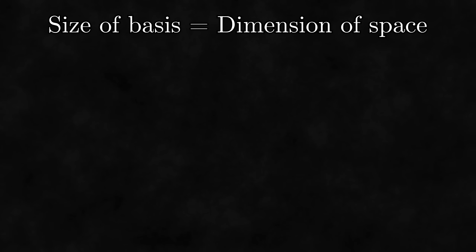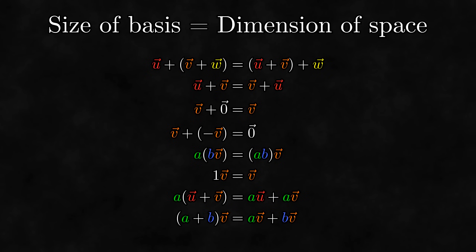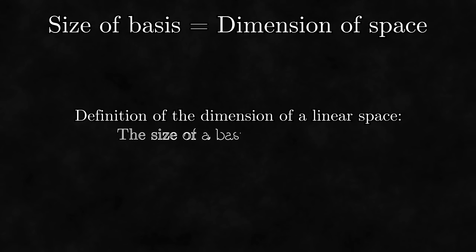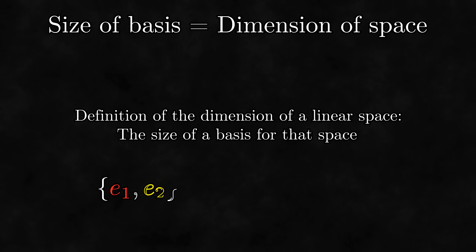But wait, what actually is the dimension of a space? While it might feel obvious when working with arrows, we've seen previously that mathematicians like to define vectors as abstract objects satisfying a bunch of conditions. So what is the dimension of a linear space that's more abstract? Well, since in the linear space of arrows the dimension of a space is the same as the size of a basis for the space, why don't we use this as the definition of the dimension of any linear space? To be more precise, we'll define the dimension of a linear space to simply be the size of a basis for that space. Thus, we will say that any abstract linear space with a basis of size two is two-dimensional, that any linear space with a basis of size three is three-dimensional, etc.